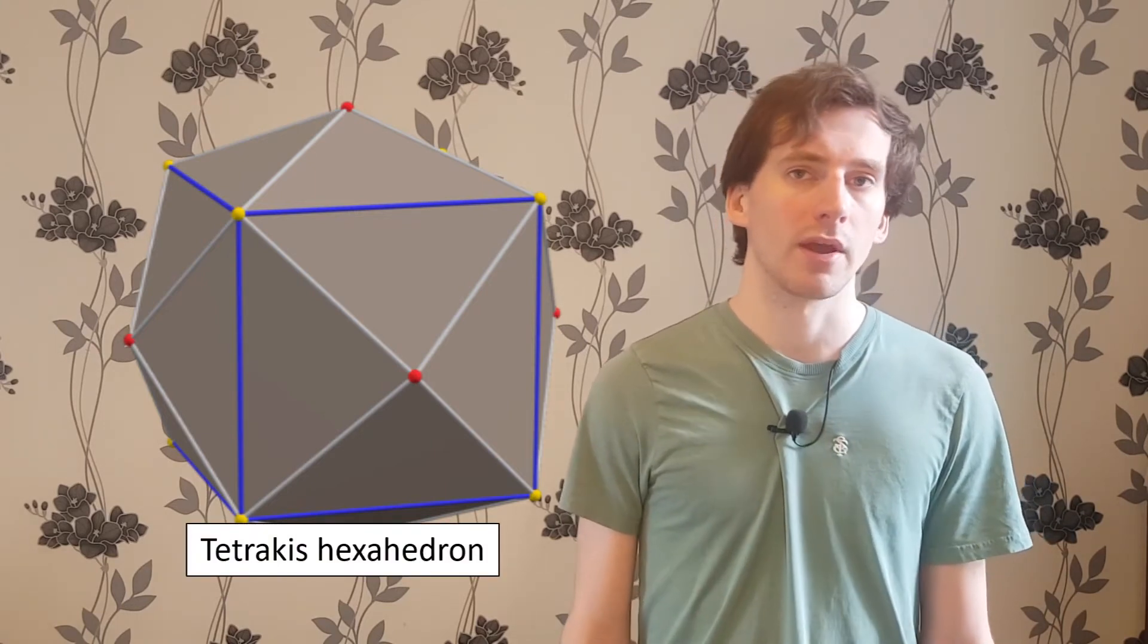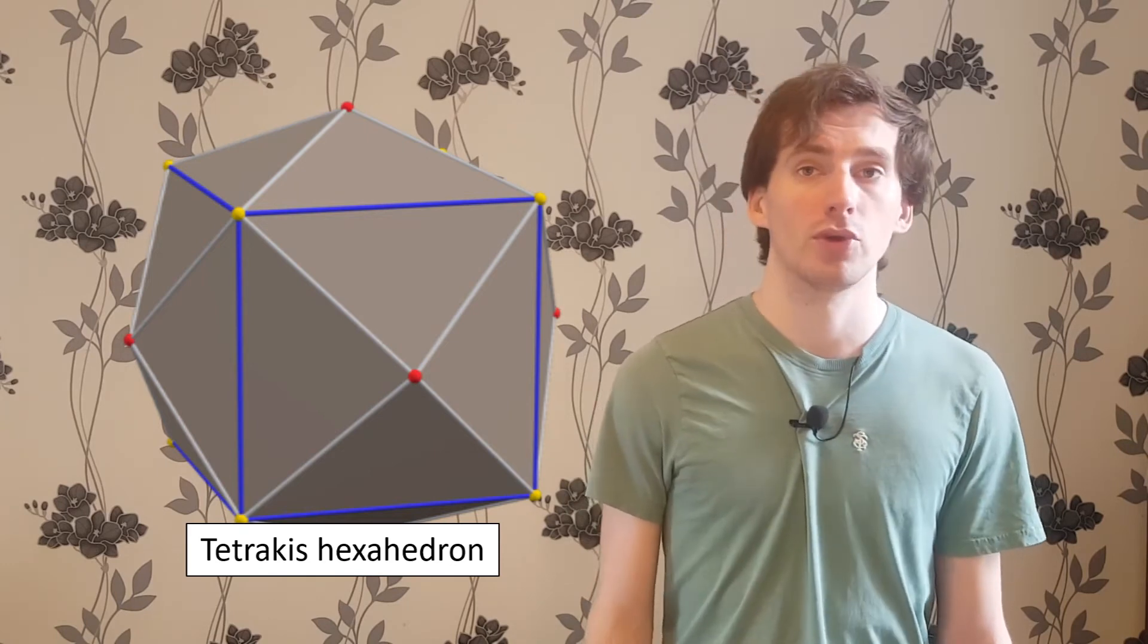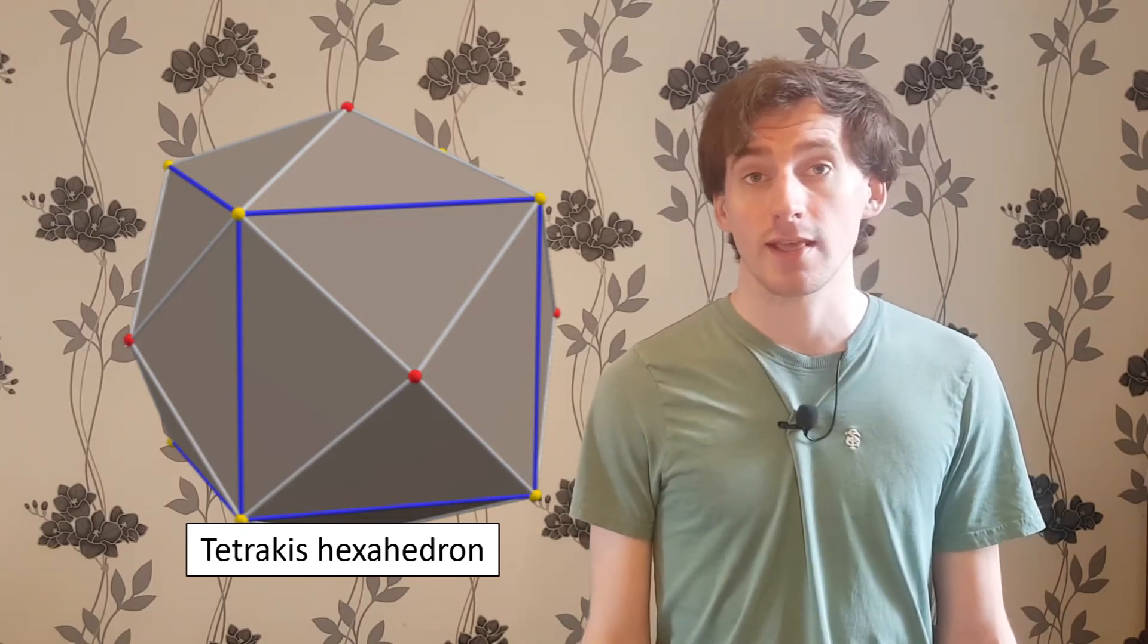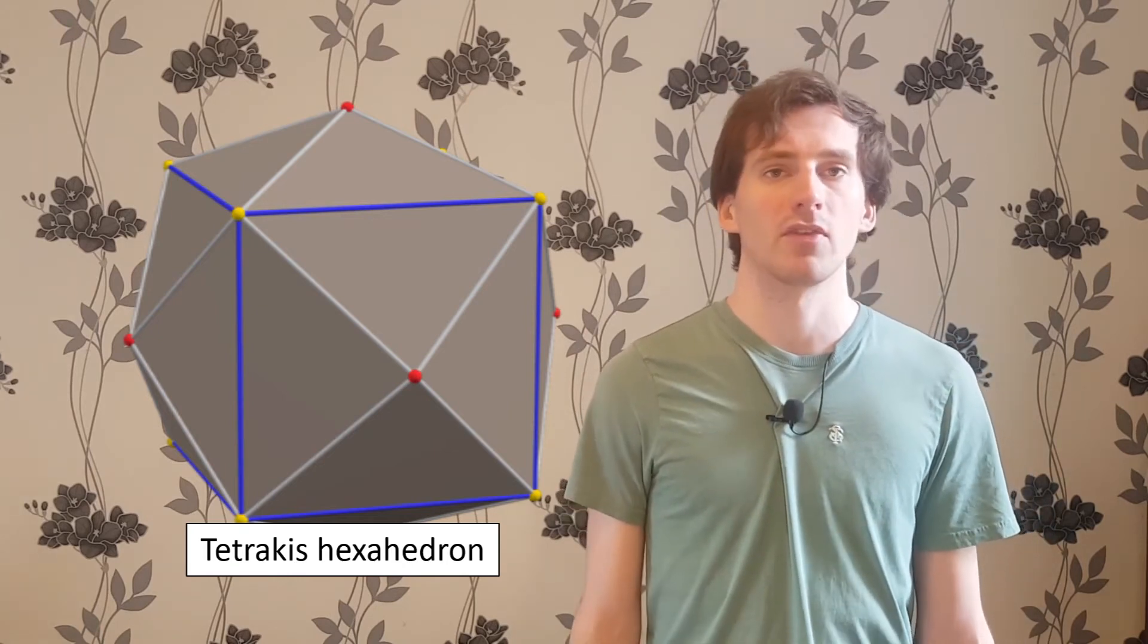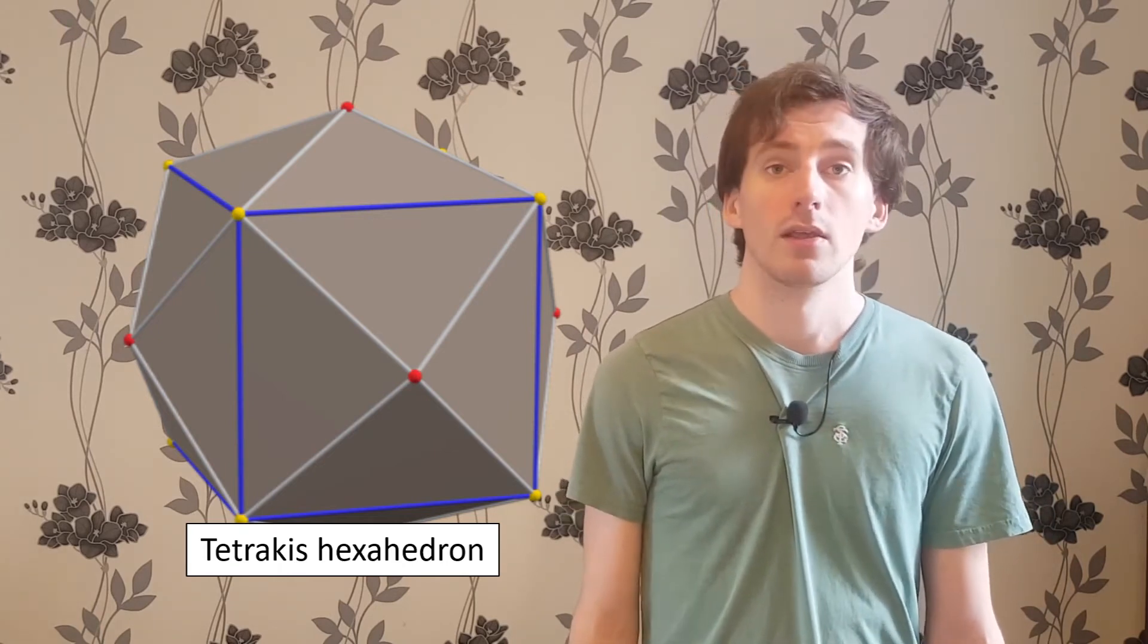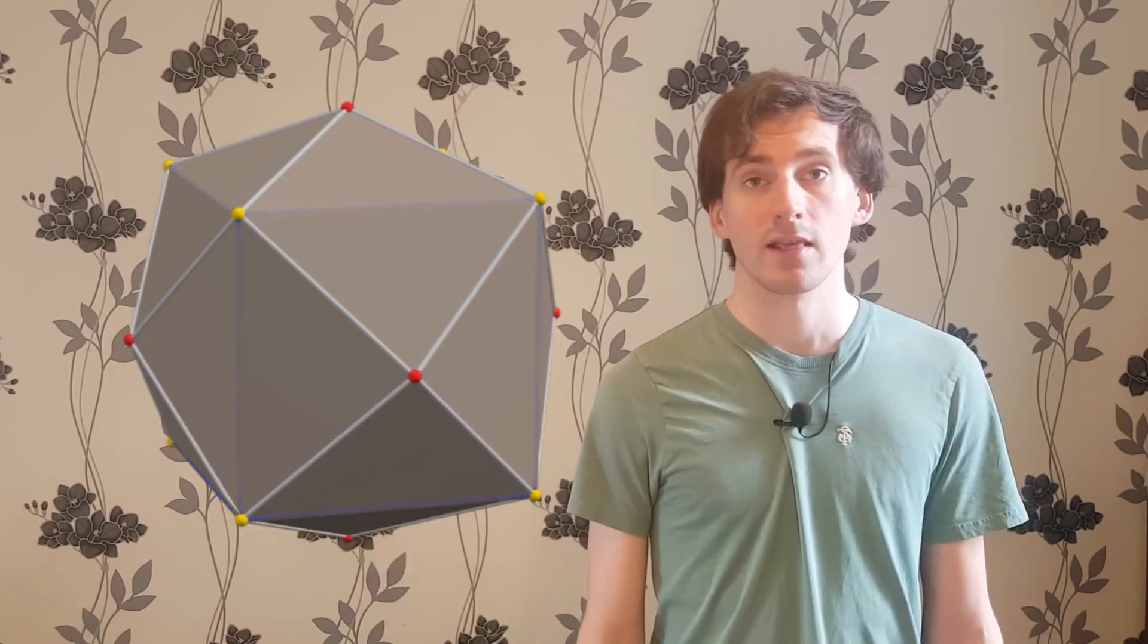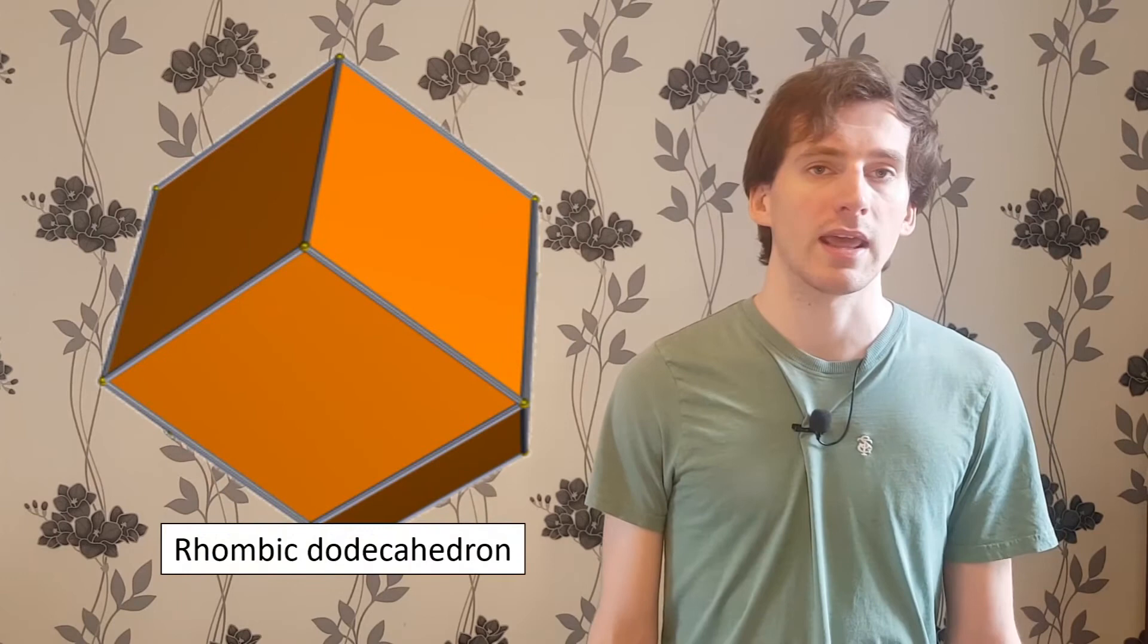You can also undo a subdivision, and you don't have to undo it in the same way that you originally subdivided, so long as you combine faces in a way respecting the symmetries of the pattern. So, if we merge faces like this, we end up not with a cube, but with the rhombic dodecahedron.